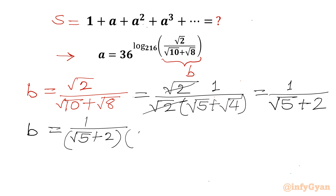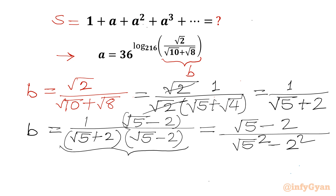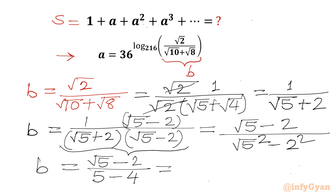Let's rationalize our denominator. We will multiply by (√5 − 2) in numerator and denominator. This gives us a difference of squares: b = (√5 − 2) / (√5² − 2²) = (√5 − 2) / (5 − 4) = √5 − 2. This is the value of b.